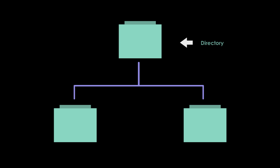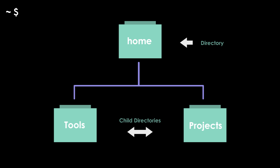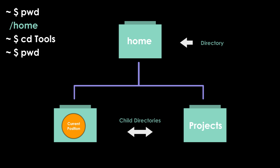Your files are organized in a hierarchy of directories. A directory is a container of files as well as other child directories. When you are on the command line, you will have a current position on this hierarchy. By typing pwd, you can identify your current path on the file system.